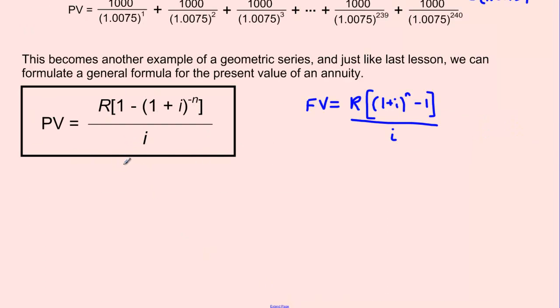Let's plug in all of our numbers into this present value formula and see what we get. So the present value that we'll need equals R, our regular withdrawals, which was 1000, times 1 minus 1 plus i, so 1.0075 to the exponent negative n, or in this case negative 240 different withdrawals we're going to make. And all of this divided by i, which was 0.0075.